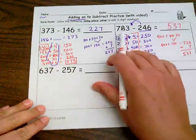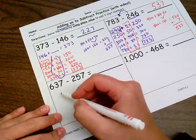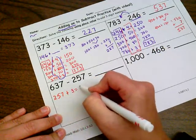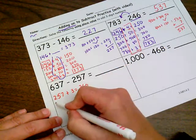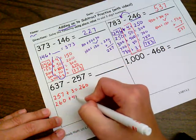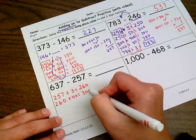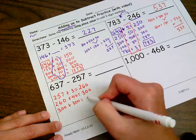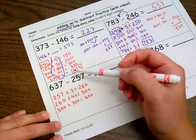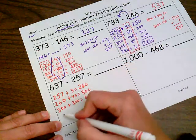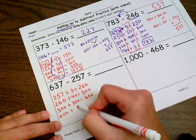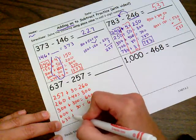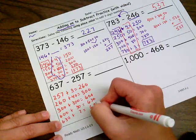Alright. I'm going to start at 257 and work my way up to 637. So 257 plus three ones will get me to 260. Now I'm going to add on some tens. I'm going to add 40 tens. That will get me to a nice 300. Ones, tens, hundreds now. So 300 plus another 300 gets me to that 600. 600 plus 30 is 630.